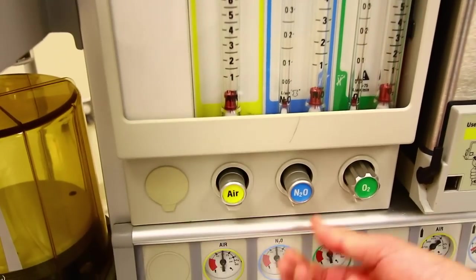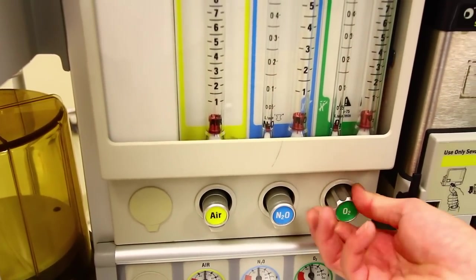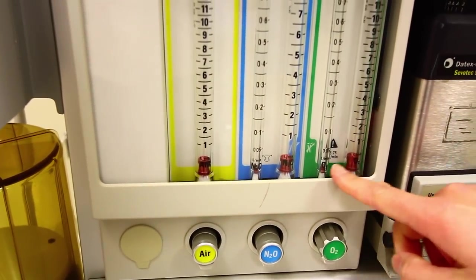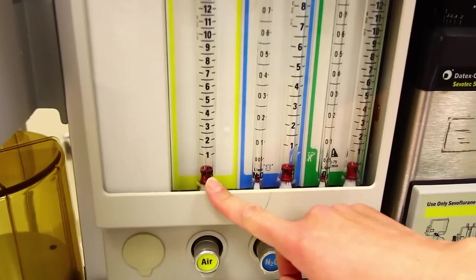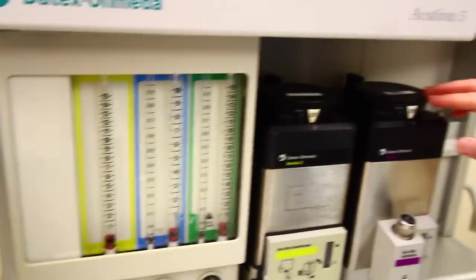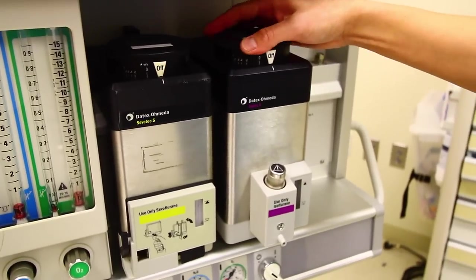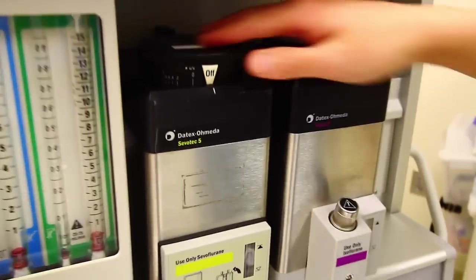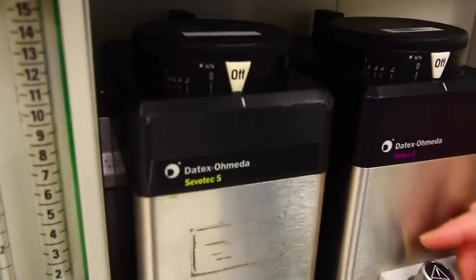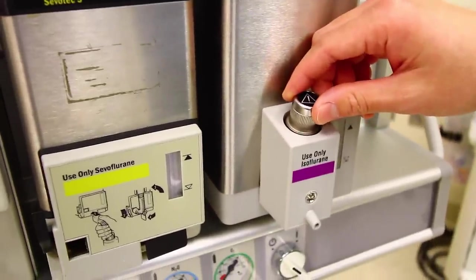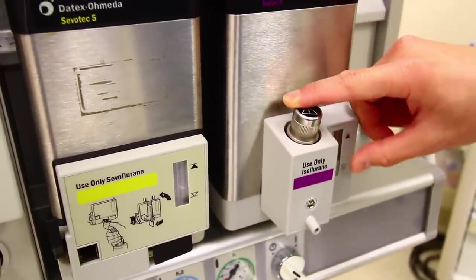The next thing is to check the low pressure system. Close the flow control valves by turning the knobs clockwise. Also note that the floats are at zero. Now make sure the vaporizers are in the off position. And if applicable, tighten the fill caps and check the fill level.